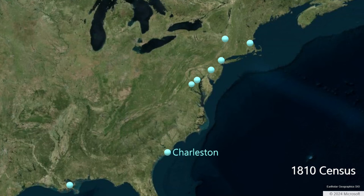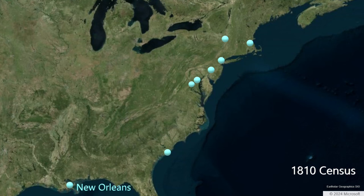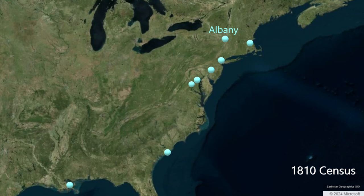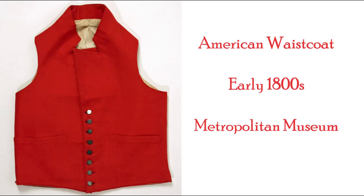Charleston, South Carolina, remains the largest city in the South, with 25,000 residents. New Orleans is unique in that it is one of the largest cities in the country, but it lies in the western territory of Orleans, with 17,000 residents in 1810. The District of Columbia, the greater Washington capital region, 10 years into its life, has 15,000 residents. Albany, New York, has a population of 11,000 in 1810, a good example of how different population figures are at this time.